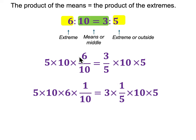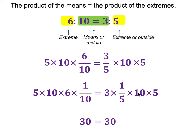If I rearrange this, 6 tenths is 6 times a tenth, and 3 fifths is 3 times 1 fifth. I can see this is always going to be equal because on the left-hand side, 10 times a tenth is 1, and what's left is 5 times 6, or 30. On the right-hand side, 5 times a fifth is 1, and what's left is 3 times 10, which is also 30. So I have 30 on both sides, and this helps me understand that this is always true.